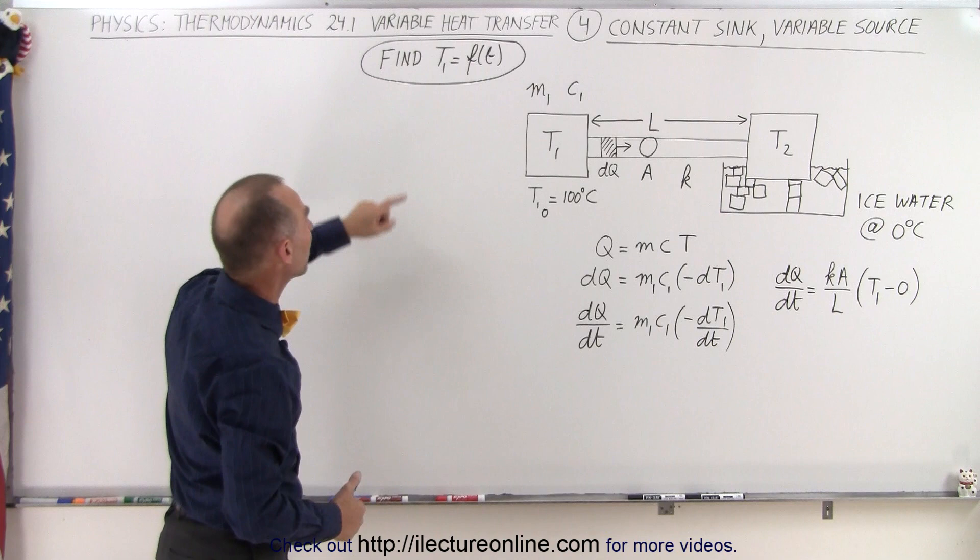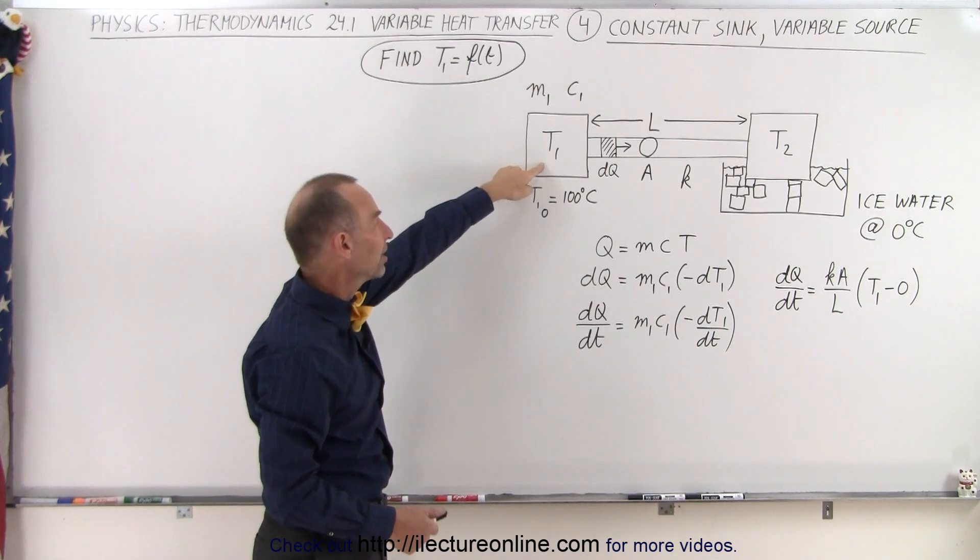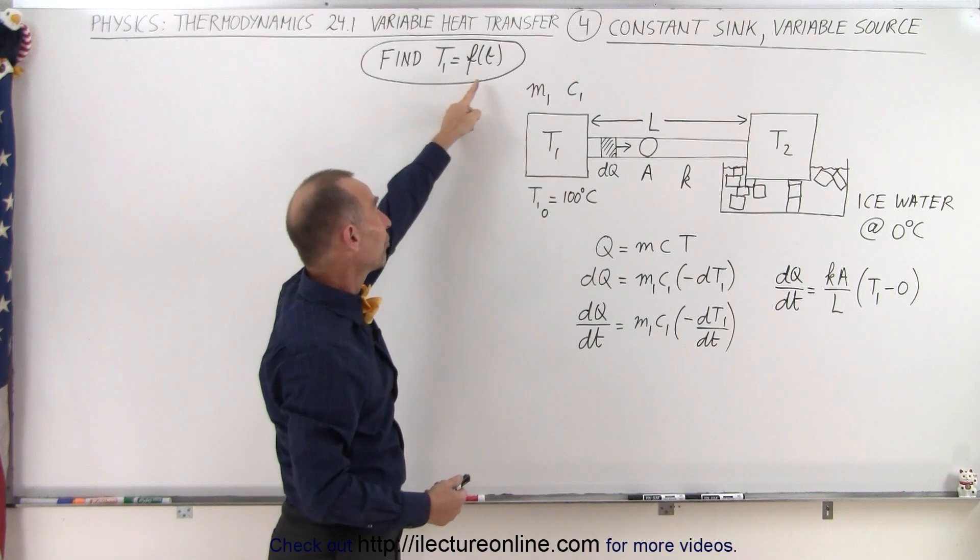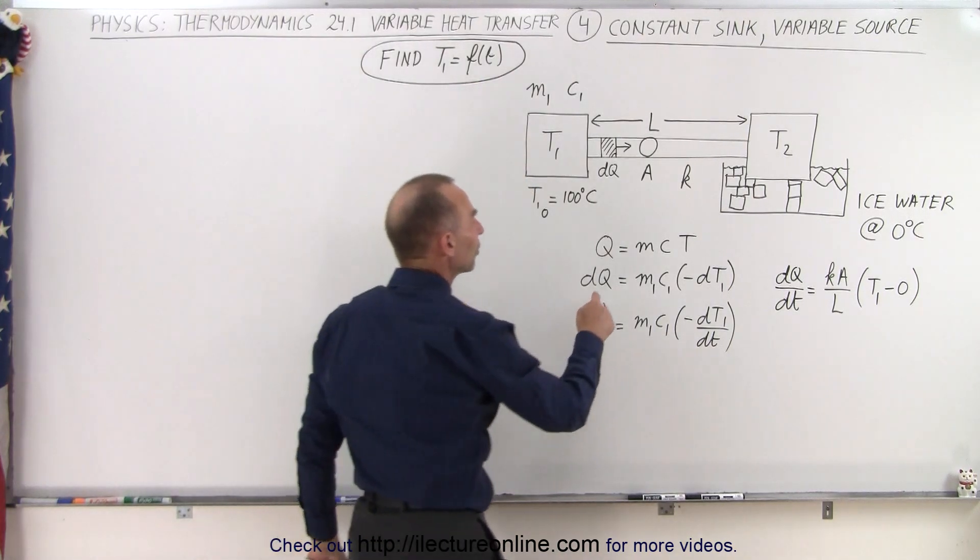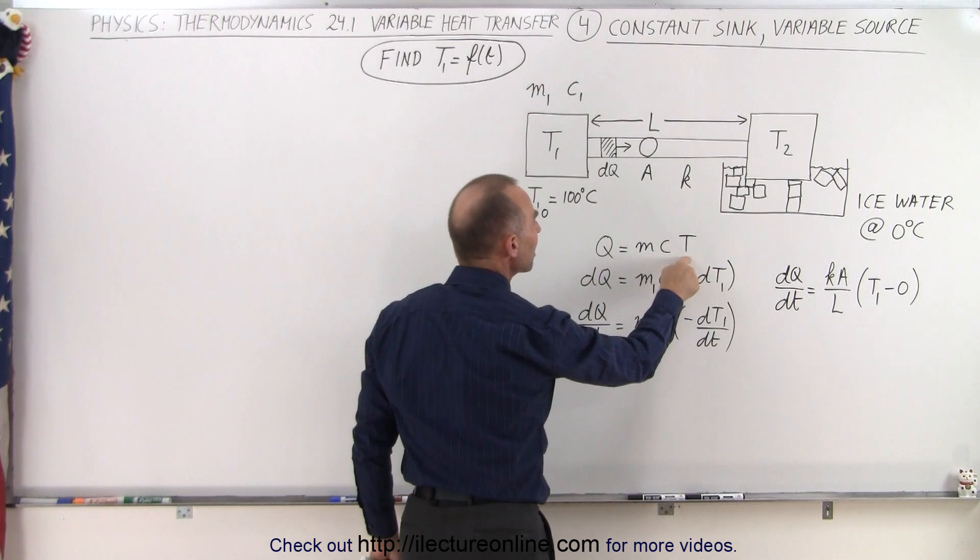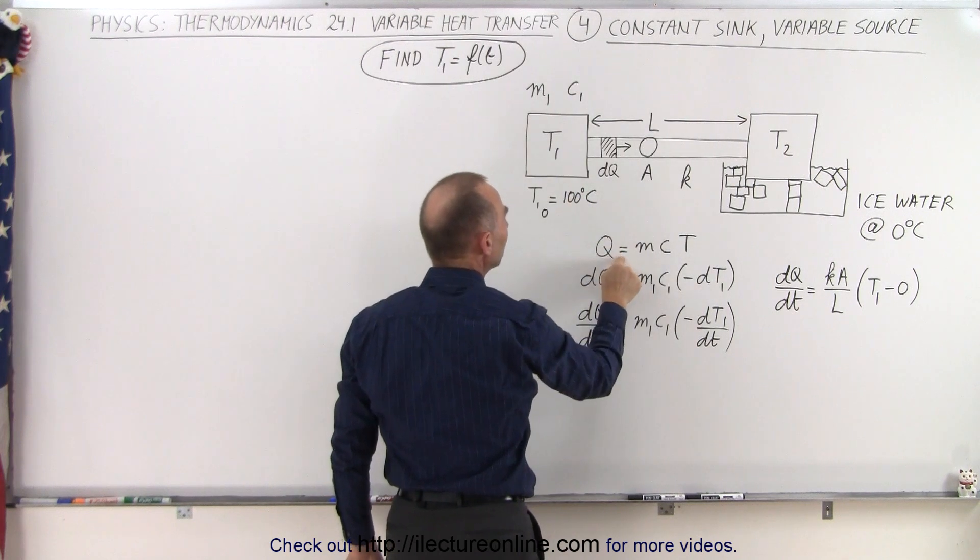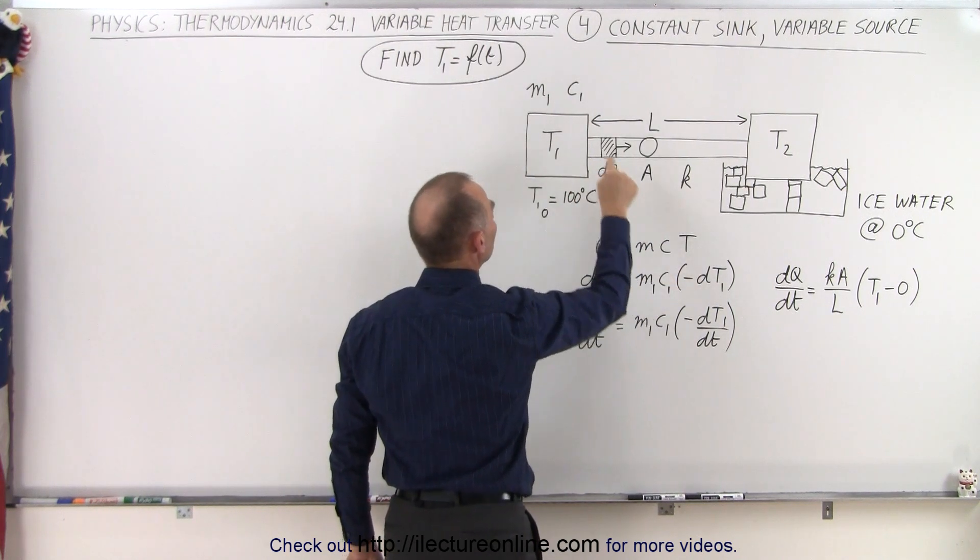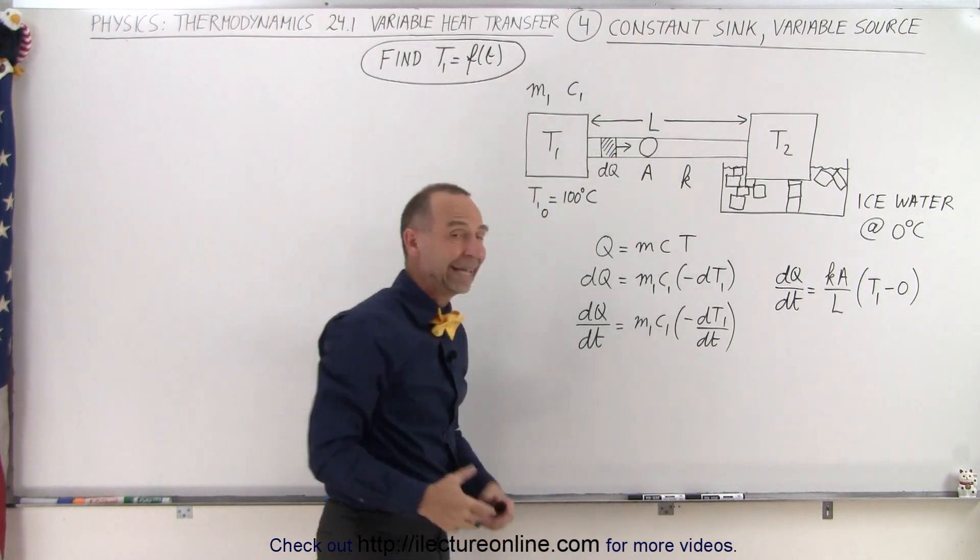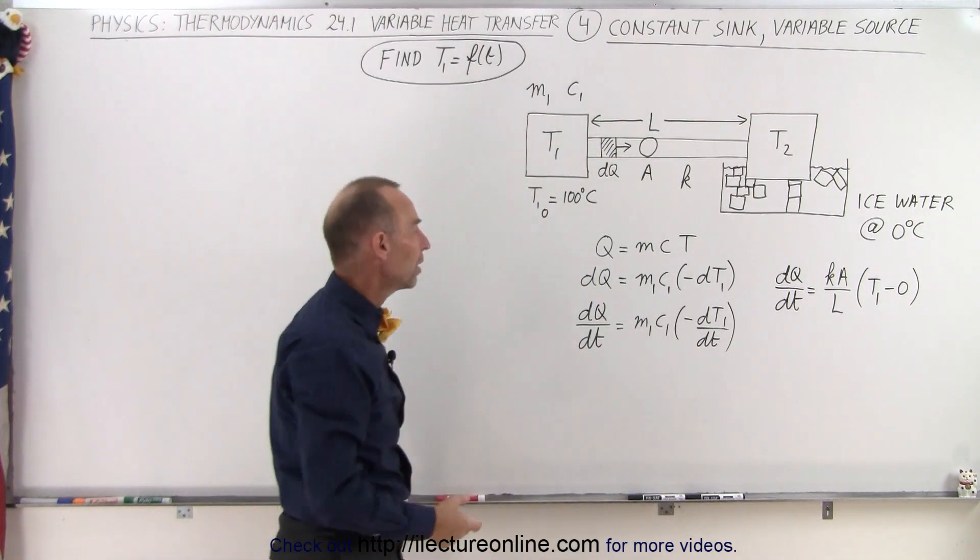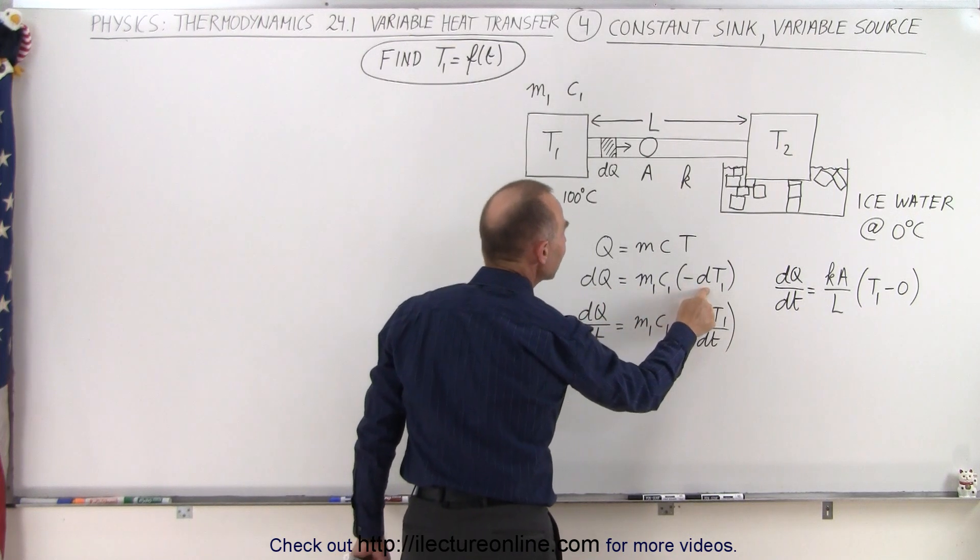What we're trying to do here is come up with an equation that will define the value of the temperature of T1, the heat source, as a function of time. As we saw in the previous video, we're going to set Q equals to MC times T. Now that's the heat contained within this source, equals the mass of the source, times the specific heat of the source, times the temperature of the source. And then if we make that into a differential equation, we can say that dQ is equal to MC dt.